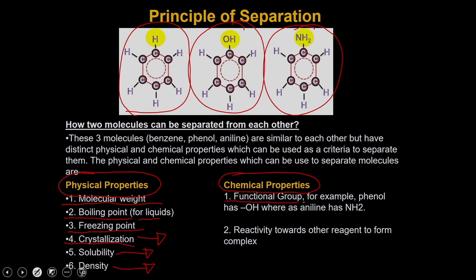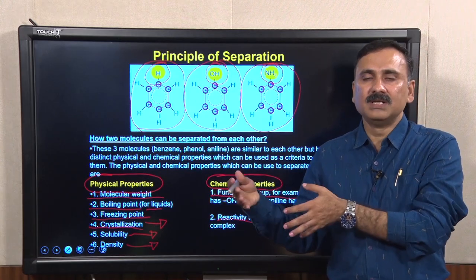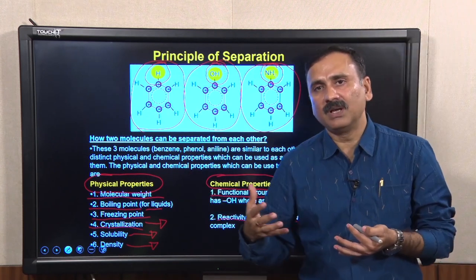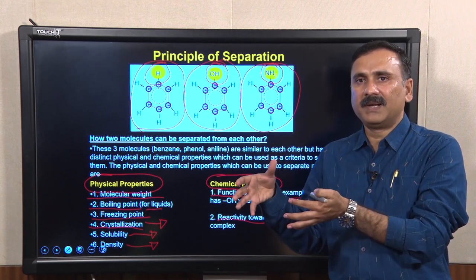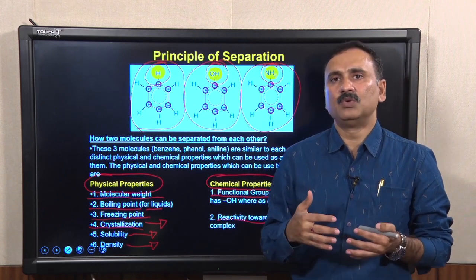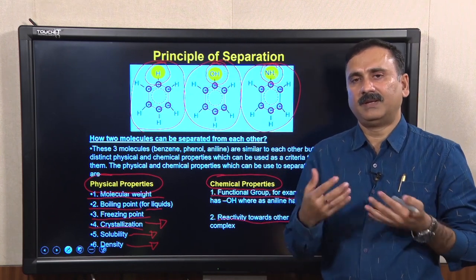You can also play with chemical properties. For example, phenol has a hydroxyl functional group whereas aniline has an NH2 functional group — both very different from benzene. You can exploit the presence of functional groups since their reactivity for a given reagent will also be different. When you react them, some molecules will react and others will not, forming a complex that changes physical properties such as solubility, allowing you to purify your desired compounds.